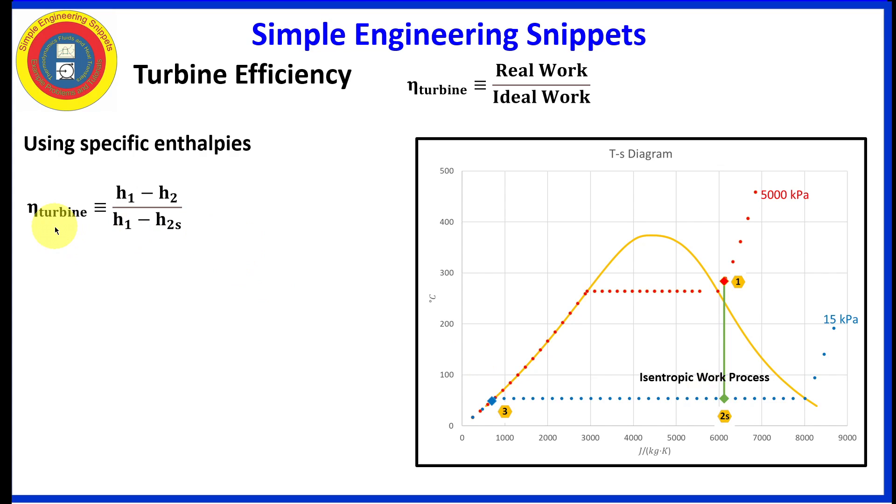Now we can define the efficiency of our turbine in terms of enthalpies. And so the real work process goes from point one to point two, which is somewhere on this 15 kilopascal isobar. We don't know exactly where yet. And in the denominator, is the difference between point one and point H2S, which we know is on the isobar and we know it's the same entropy as point one. So we have two unknowns, H2 and H2S. We need to determine those.